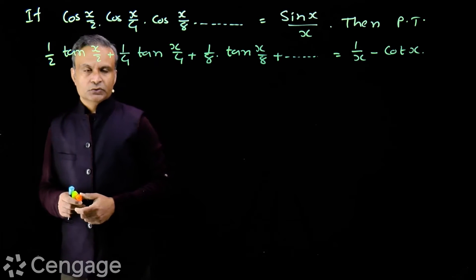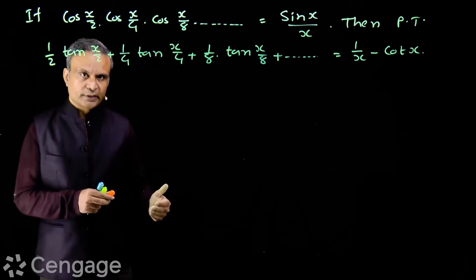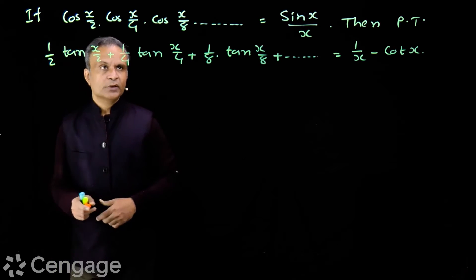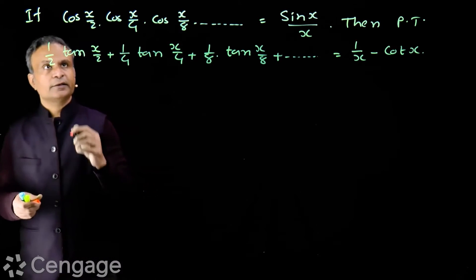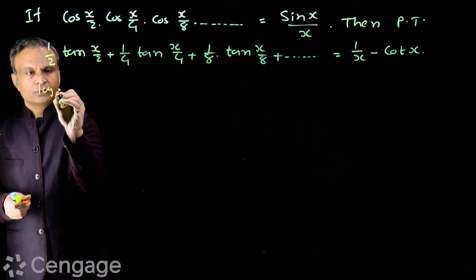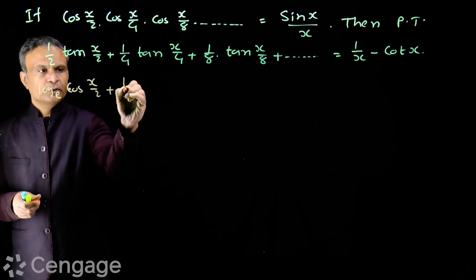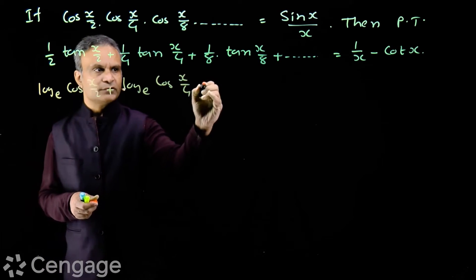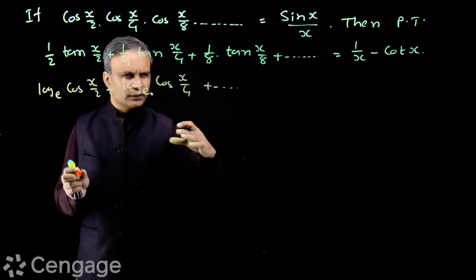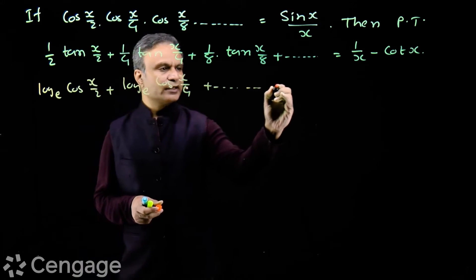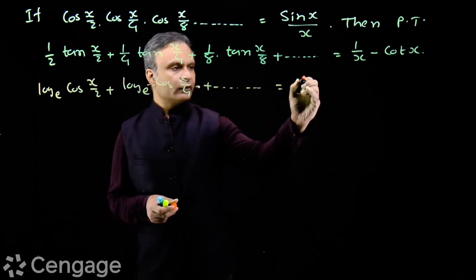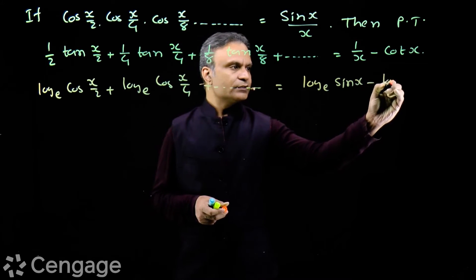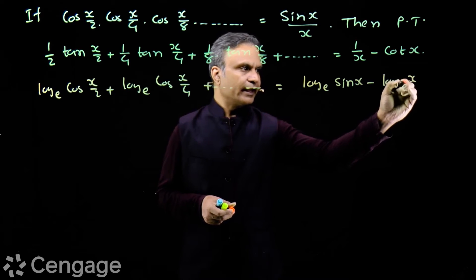Taking logarithm on both sides: log(cos(x/2)) + log(cos(x/4)) + log(cos(x/8)) + ... = log(sin x) - log(x).